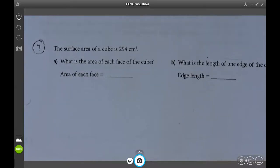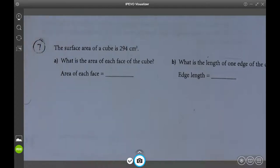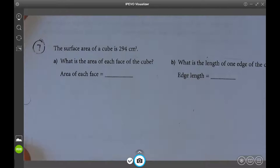Okay, so surface area of a cube is 294 centimeters squared. What's the area of each face of the cube? I don't know if I really need to help you with this one, although it is pretty tricky.